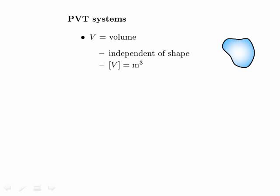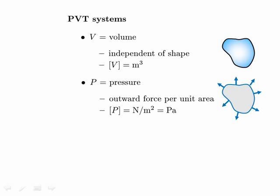The next variable is pressure — the outward force per unit area on the walls of a container holding the PVT system. It's measured in newtons divided by meters squared, and a newton per meter squared is called a pascal. A newton is not that big a force, so a pascal is a pretty small unit of pressure. Atmospheric pressure on Earth's surface is about 100,000 pascals, about 10 to the fifth pascals.